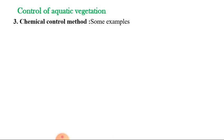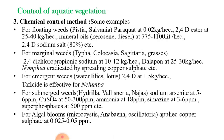Some weedicides are species-specific and some work well on all kinds of aquatic weeds. For floating weeds, paraquat at 0.02 kg per hectare can be used for controlling Pistia and Salvinia. We can also use 2,4-D ester at 25 to 40 kg per hectare, mineral oils like kerosene or diesel at 775 to 1100 liters per hectare, or 2,4-D sodium salt 80% for eradication of floating weeds.